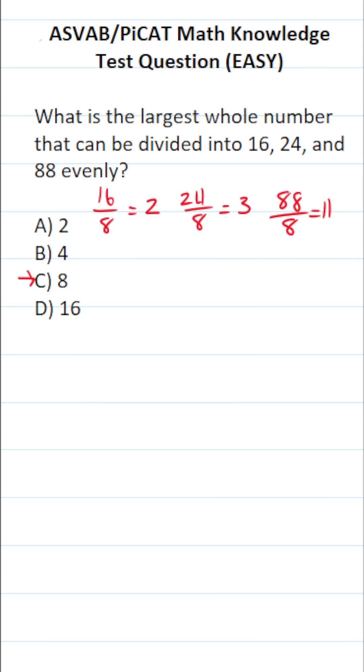So as you can see, 8 goes into 16, 24, and 88 evenly. All right, so that means B and A are not correct answer choices.